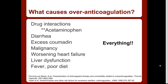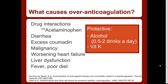Other things: worsening malignancy, heart failure, liver dysfunction. Also think about diet — if they look very wasted or cachectic, have a higher threshold for checking the INR. As far as things that are protective, obviously vitamin K, and also alcohol is, interestingly enough, protective.